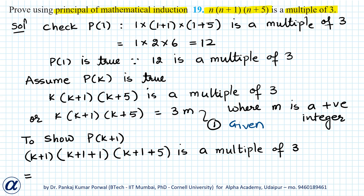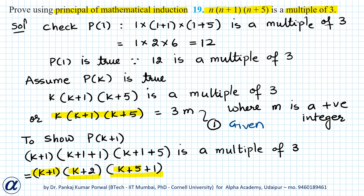I can simplify this expression by rearrangement. I will leave k+1 as it is. Next, I write the second factor as k+2 and the third as k+5+1. Here, I want to get an expression similar to k, k+1, and k+5. Since k+1 is already present, to get k(k+5), I will keep k and k+5 together, and multiply the two factors keeping k and 2, and k+5 and 1 separately.